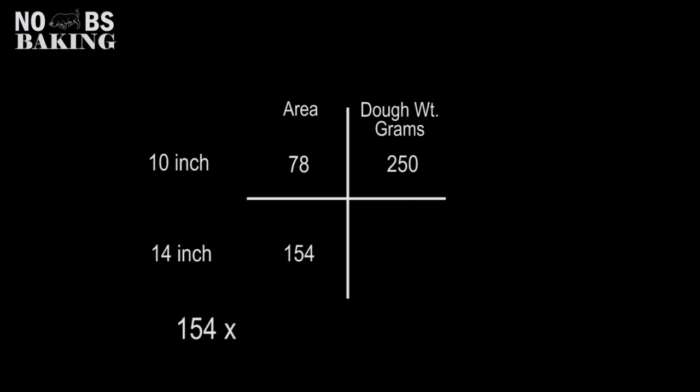Okay, so now we can use ratio and proportion to solve the problem. So 154 cubic inches times 250 grams divided by 78 cubic inches equals 490 grams. This should have been the dough weight for the 14 inch pizza.